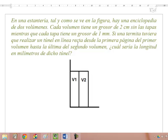Si una termita tuviera que realizar un túnel en línea recta desde la primera página del primer volumen hasta la última página del segundo volumen, ¿cuál sería la longitud en milímetros de dicho túnel? Yo rápidamente dije que 42 milímetros y no me coincidía con la respuesta que estaba viendo en internet y resulta que la respuesta lógica es 2 milímetros.